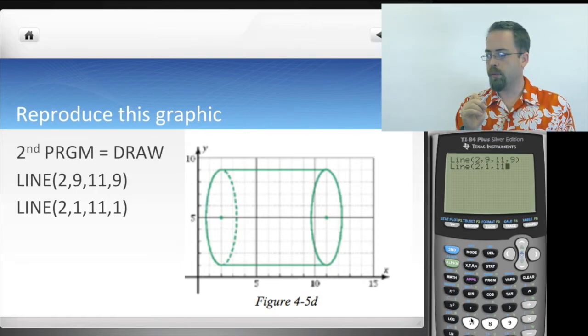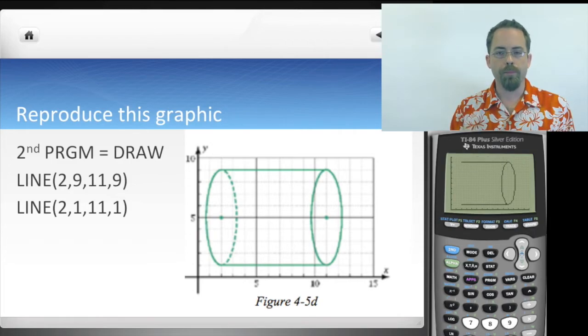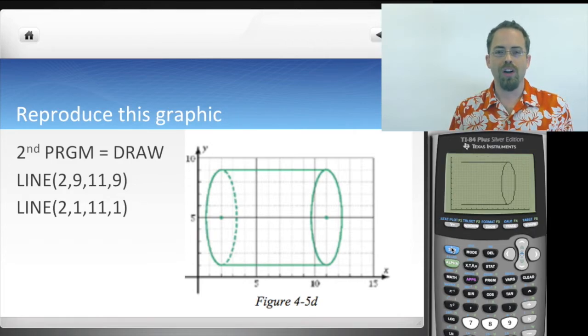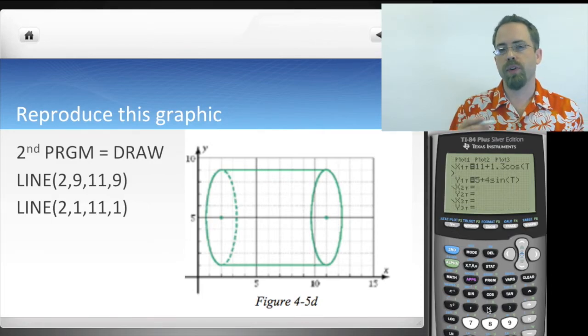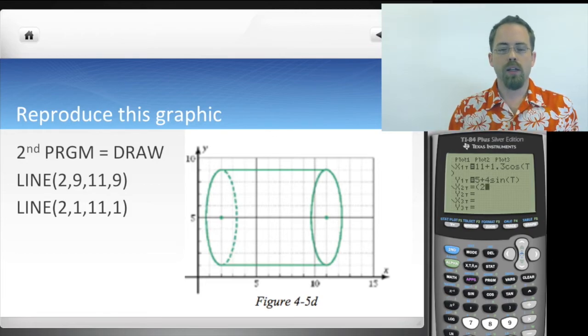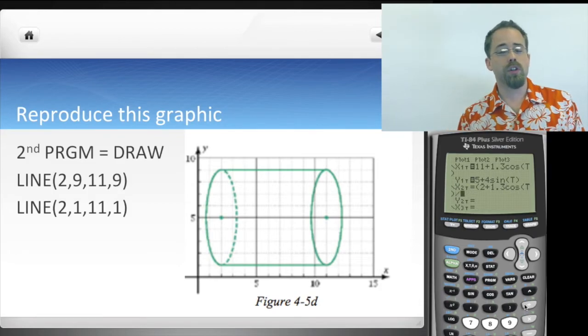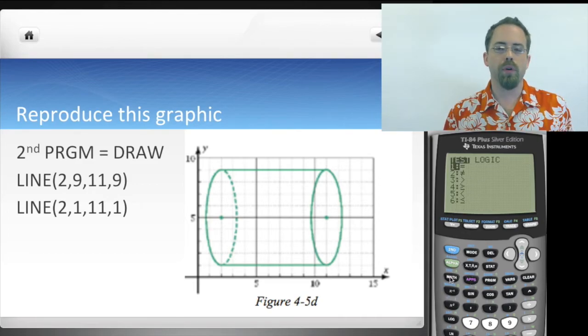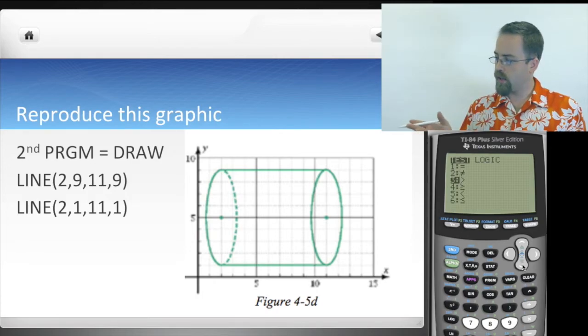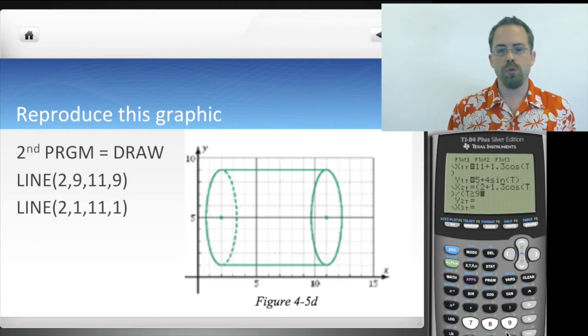So, let's practice that. Get out your calculator and if you press second program, there is an option there to draw and one of the things that we need to draw is a line. And with the line function here on the calculator, you specify the starting X comma Y comma the finishing X comma Y and it will draw straight lines for you. So, with this, we can turn our calculator into kind of a very, very straight-laced drawing program. And I would like for you to get this figure here, figure 4-5-D, into your calculator.